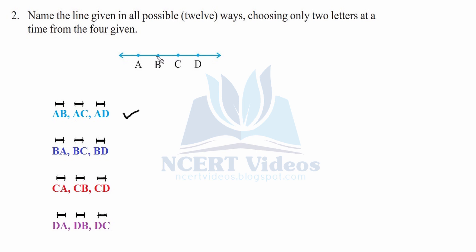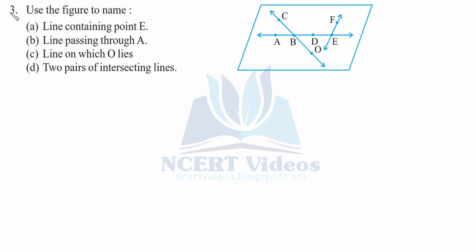From point B: BA, BC, and BD. From point C: CA, CB, and CD. From point D: DA, DB, and DC. You must keep in mind to use arrows above the letters as the sign for a line. These are the 12 possible ways to represent a line.